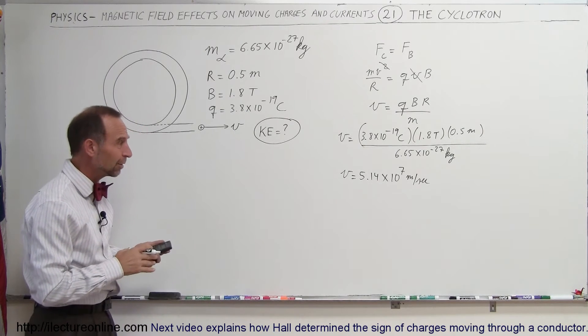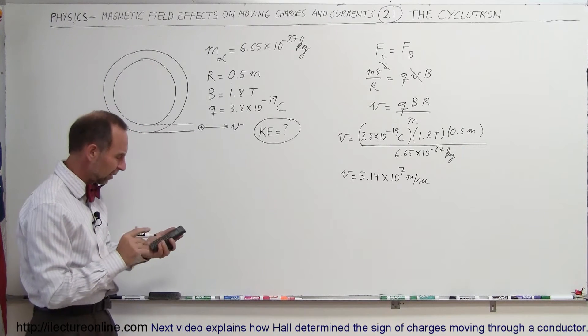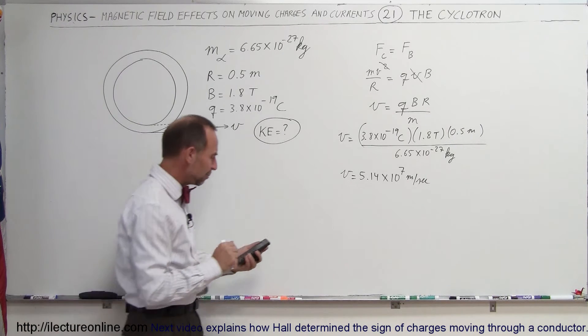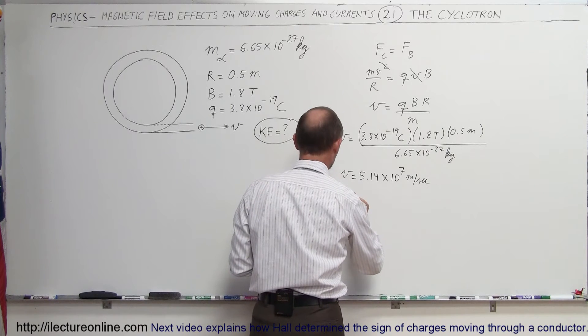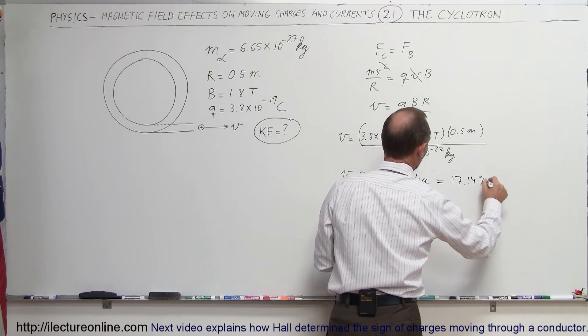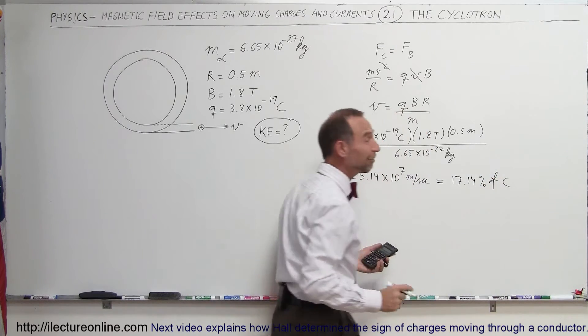So let's find out what the percentage of the speed of light that is. So if we divide that by 3 e to the 8, we get 17.14%. So this is equal to 17.14% of the speed of light, which is quite fast.